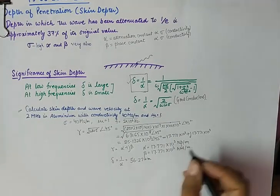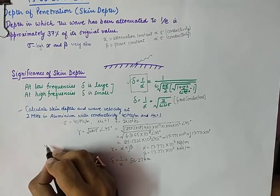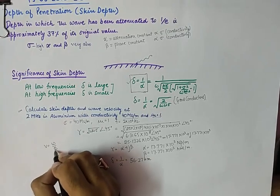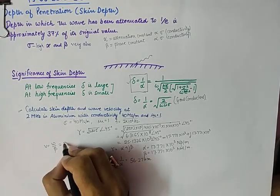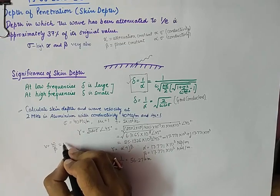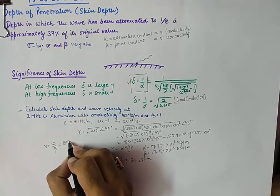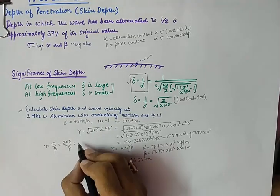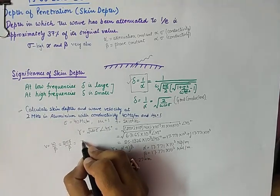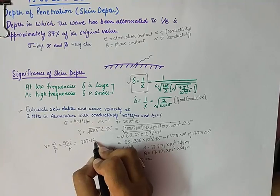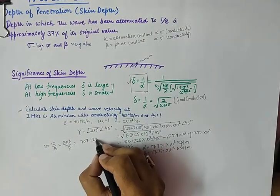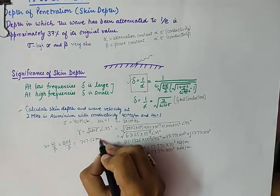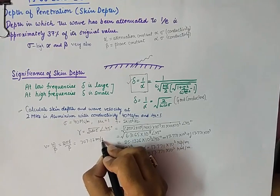And wave velocity is given by omega upon beta. Omega is 2 pi f upon beta. So, substituting the values here we get the value as 707.12 meters per second.